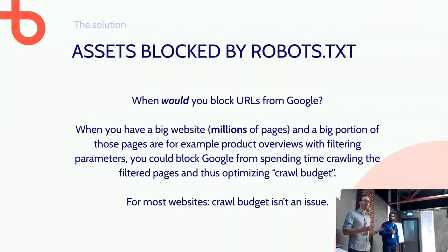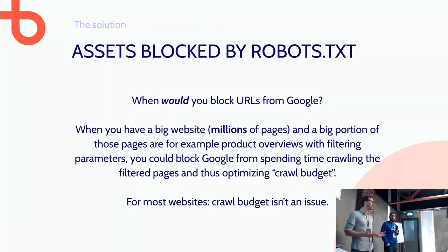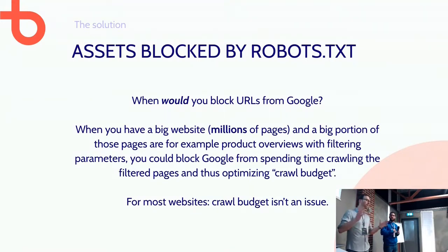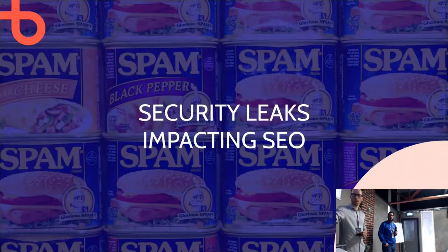When would you block things from Google? Robots.txt has its use — for example, if you have a very large website with hundreds of thousands or even millions of pages and you're using faceted navigation with URL parameters that shouldn't be indexed, you can block those off to avoid Google spending time crawling all filtered pages. But for most websites up to around 10,000 pages, you shouldn't even think about this — just leave it all open and let Google decide what to crawl.